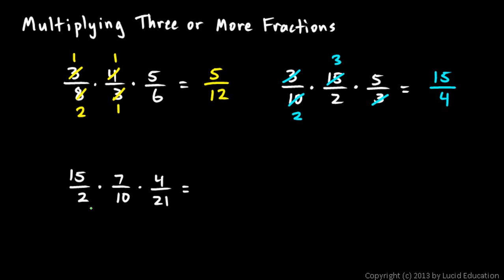And then down here: 15/2 × 7/10 × 4/21. Let's see. Well, fifteen and ten are both divisible by five, so that reduces to a three and a two. And look here, seven and twenty-one are both divisible by seven. So seven divided by seven is one, and twenty-one divided by seven is three.